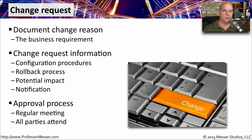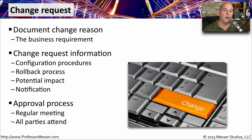Most organizations will do a formal change control process meeting every week. For example, on Thursdays at 11 o'clock, everyone meets and discusses plans for changes occurring over the weekend, two weeks from now, or next month. The exact process and time frames vary by organization, but the important part is that everyone attends. A change to the network can still have impact on the server team, security team, networking team, voice over IP team, and so on.